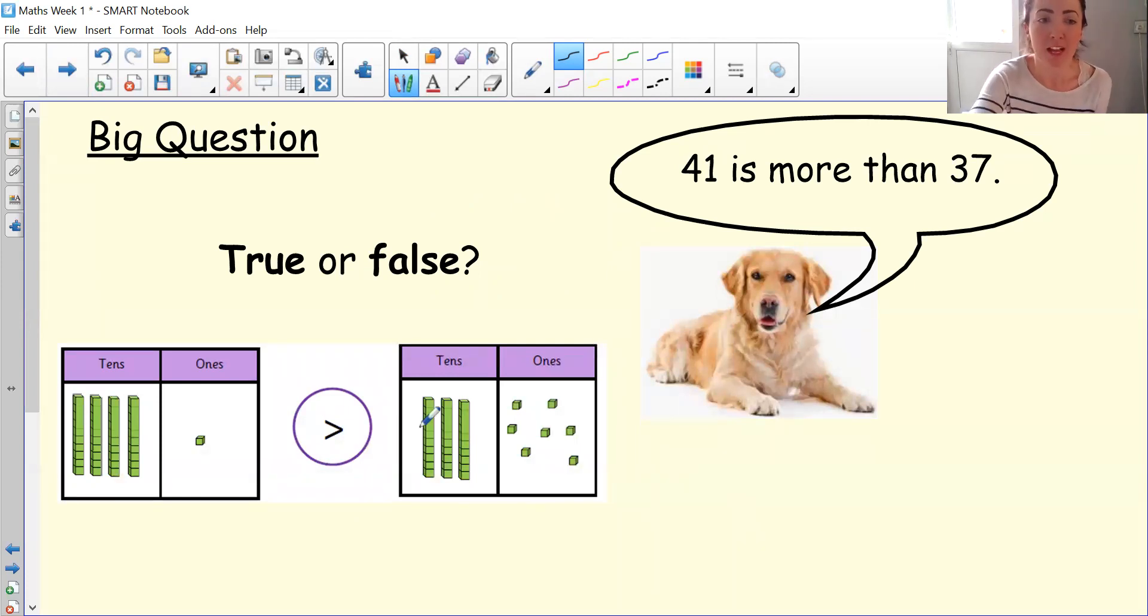Let's have a look at the representation and see if that matches what Stevie is saying. The first number Stevie mentions is 41. Have a look at this table. Does this show 41? How many tens are in 41? That's right, four, because when we look at a two-digit number, the first digit tells us how many tens there are. So four tens are 40. Are there four tens? Yes, there are. And then how many ones? One one. So she's represented it correctly here. 41.